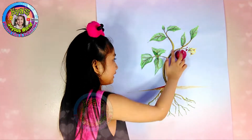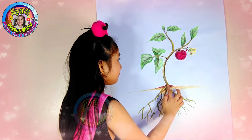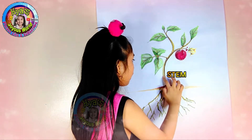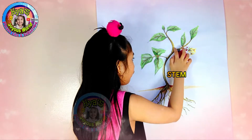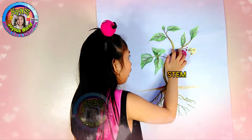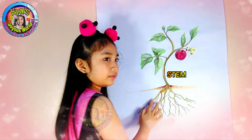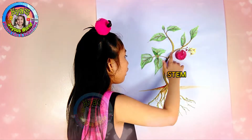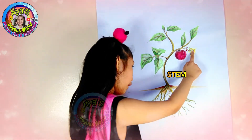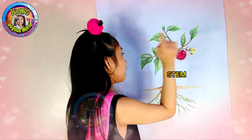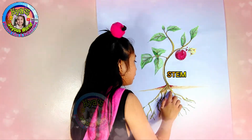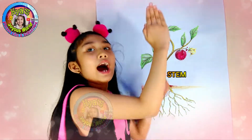This is the stem. It gives water and also food to the other parts of the plant. And also it keeps the flowers, the tomato, and also the leaves to stand up.